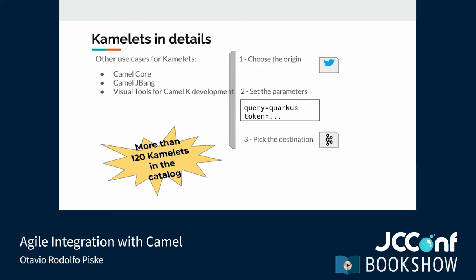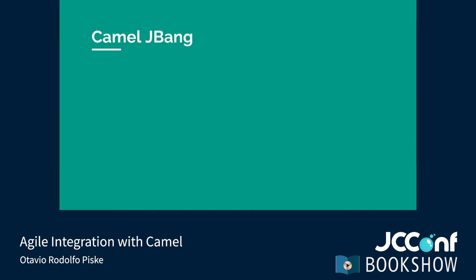All of these Camelets can help us develop great integrations. However, sometimes we may want to prototype, debug, or create a small producer or consumer script to automate tasks. Sometimes we need to be agile before engaging in developing our projects — for example, prototyping solutions quickly is one of the challenges of integrating systems. CamelJBang is a tool from CamelCore that helps us in these tasks.